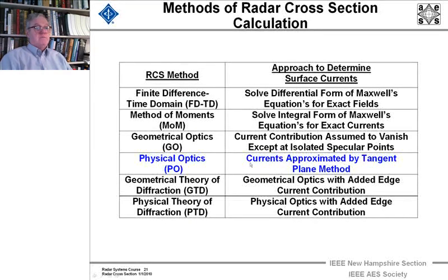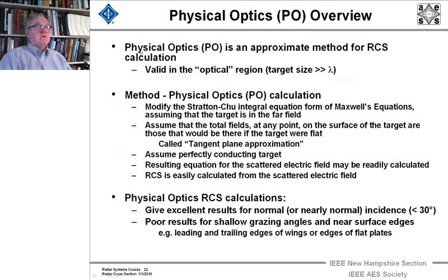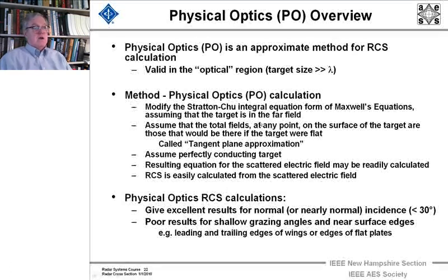Now on to physical optics. Here what we use is a tangent plane approximation to measure the currents. In physical optics, it's an approximate method for calculating. And here the target size again has to be much greater than the wavelength. The method used is we take the Stratton-Chew integral equation form of Maxwell equations. You remember that from the method of moments. Assume that the target is in the far field, and assume that the total fields at any point on the surface of the target are those that would be there if the target were flat.